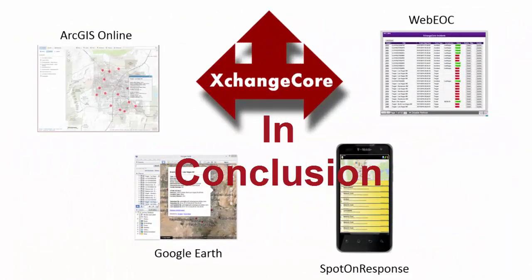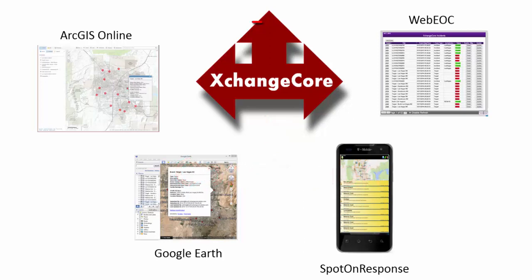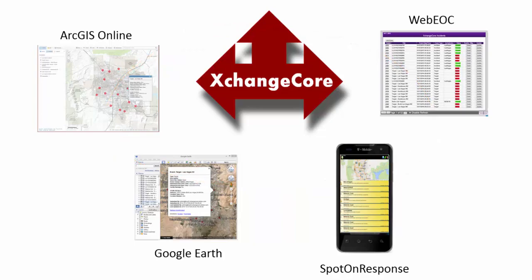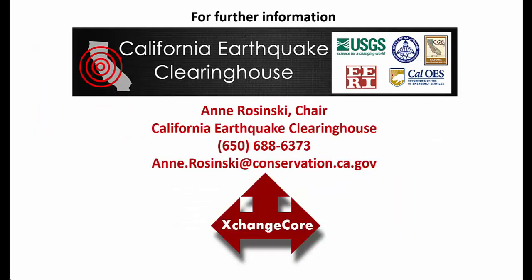So Exchange Core sits between CalEOC, ArcGIS Online, supports Google Earth, as well as other applications like the Spot-On Response mobile app. All of this has been made possible by the efforts of the California Earthquake Clearinghouse and the contract between Cal OES and Spot-On Response. Thank you very much.